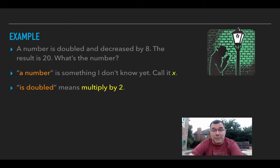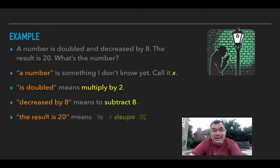When I say is doubled, that means it's been multiplied by 2. Decreased by 8 means that we need to subtract 8, and finally the result is 20, that means the answer is going to equal 20. So let's put all of that together: I've got x multiplied by 2, subtract 8, equals 20. So I get 2x minus 8 equals 20.